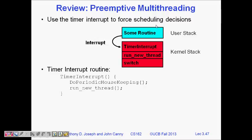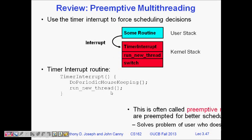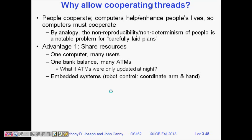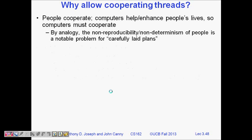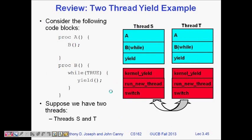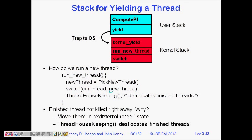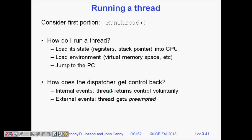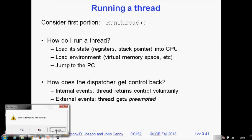Preemptive multithreading uses a timer interrupt for scheduling. 'Preemptive' means you can interrupt a running routine — a timer fires, interrupts the current thread, runs new thread housekeeping, and switches to a new thread. This is preemptive multithreading. I hope you now understand what threading is and how dispatching works — how the operating system runs code that schedules and switches between threads.